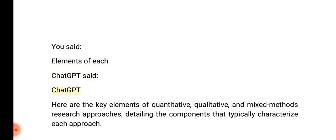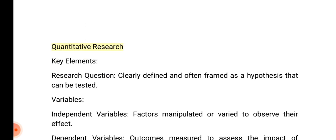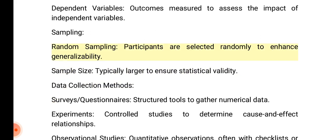Here are the key elements of quantitative, qualitative, and mixed methods research. Quantitative research key elements — research question: clearly defined and often framed as a hypothesis that can be tested. Variables: independent variables are factors manipulated or varied to observe their effect; dependent variables are outcomes measured to assess the impact. Sampling: random sampling is used to enhance generalizability, with typically larger sample sizes to ensure statistical validity.